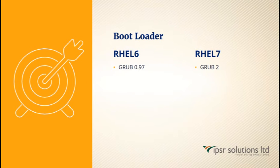Bootloader. The bootloader used is GRUB2 in RHEL7, and in RHEL6 it is GRUB 0.97. Additional firmware types including BIOS and the ability to boot on various file systems were available with GRUB2.